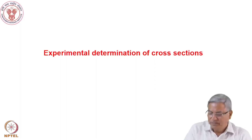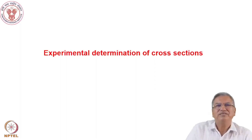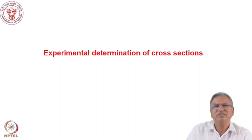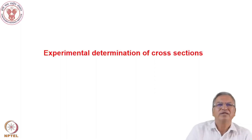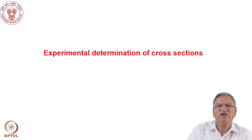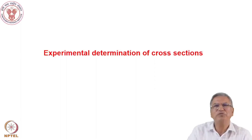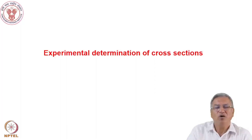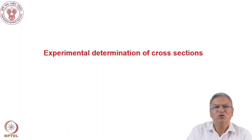Hello everyone. Previously we discussed the cross sections for nuclear reactions, particularly for neutron-induced reactions and charge particle induced reactions. Now we will discuss how to determine the cross sections experimentally. When you irradiate a target in an accelerator or a reactor, how the active atoms are formed — you can determine the activity, and from that you can determine the cross sections.